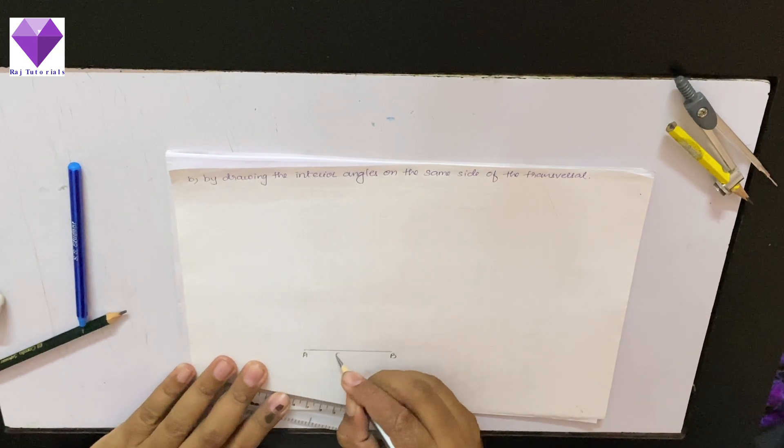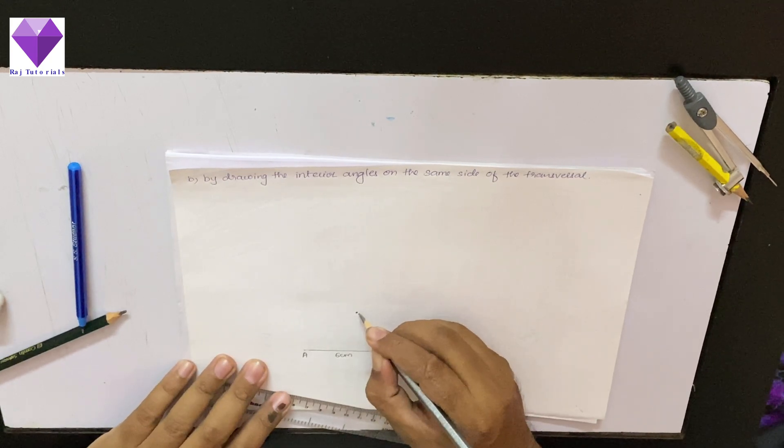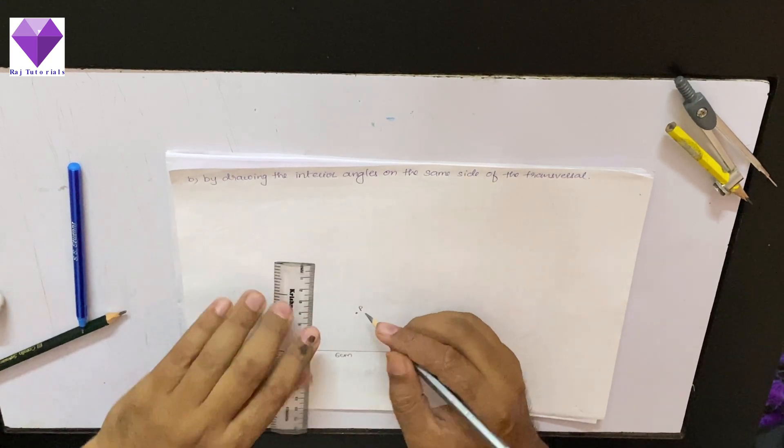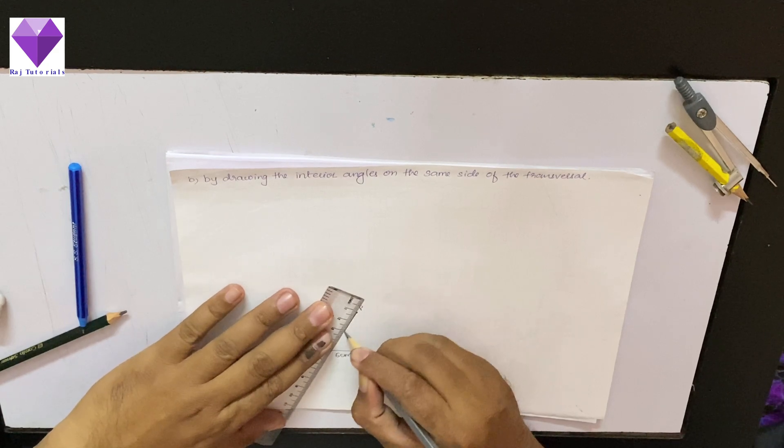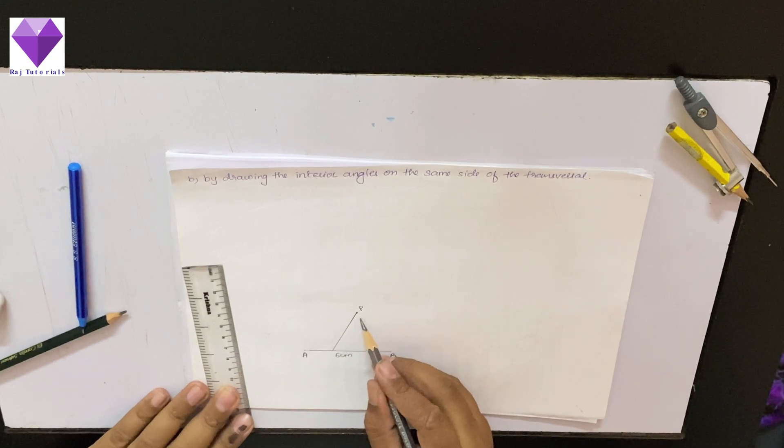First, I am taking AB equal to 6 centimeter, now I am taking any point P and I am joining it with the line segment. Now, till now we were doing alternate angles, this and this angle.